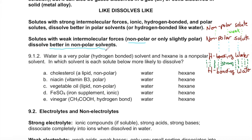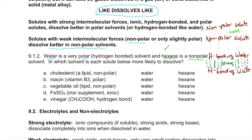Nonpolar solutes dissolve better in nonpolar solvents. The takeaway thing to remember is that like dissolves like. Polar things dissolve better in polar solvents; nonpolar things dissolve better in nonpolar solvents. We have water as our example of the polar solvent. We need something to be a nonpolar solvent, so we've chosen hexane. Hexane is only made of carbon and hydrogen — remember hydrogen and carbon have nonpolar bonds — so something that is only a hydrocarbon will be nonpolar.